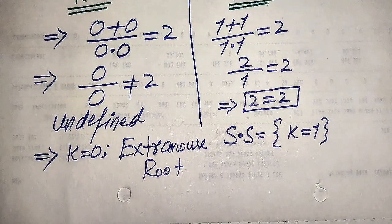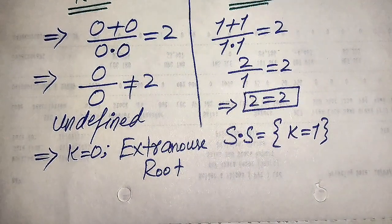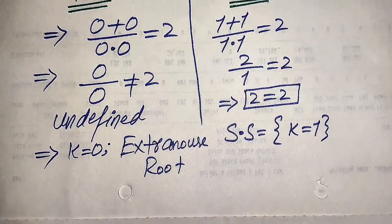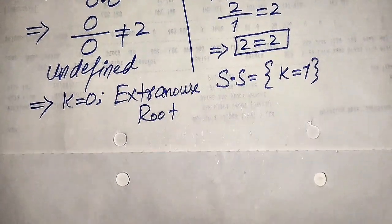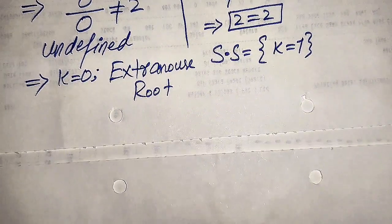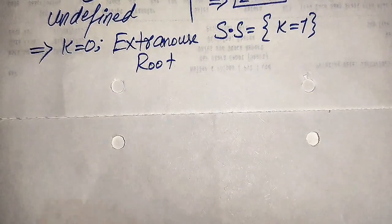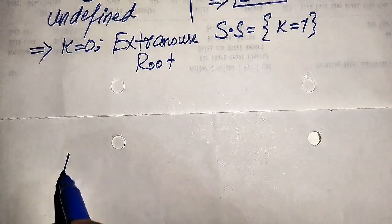So the solution set of this question is k equals 1. This is the only solution obtained from the first method. Now we solve this problem again using the second method.